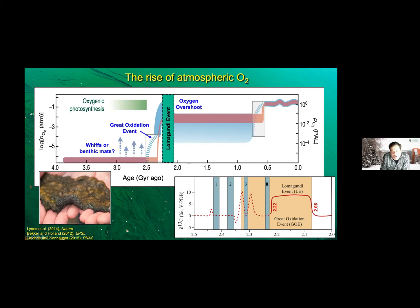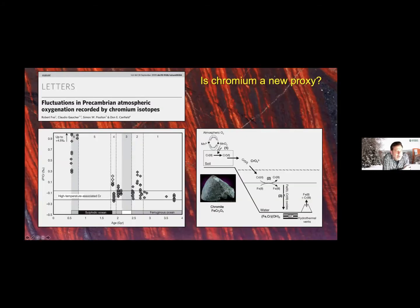I got into this research based on a paper from Robert Frei, who looked at chromium isotopes in banded iron formations through time. A banded iron formation consists of these chemical precipitates dominant during the Precambrian — iron and silica rich rocks. He found that wherever you get a positive chromium fractionation, that is indicative of atmospheric O2. You start with chromium in the Cr3+ state — this is chromite, a mineral common in mafic and ultramafic rocks.